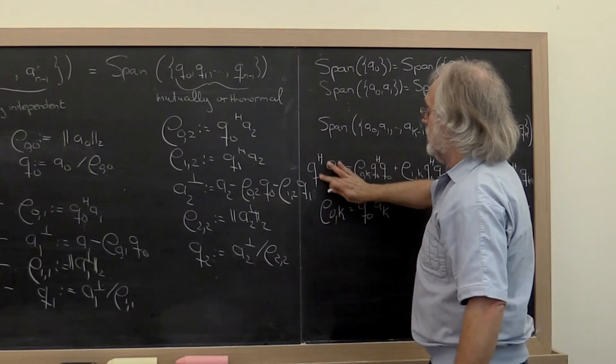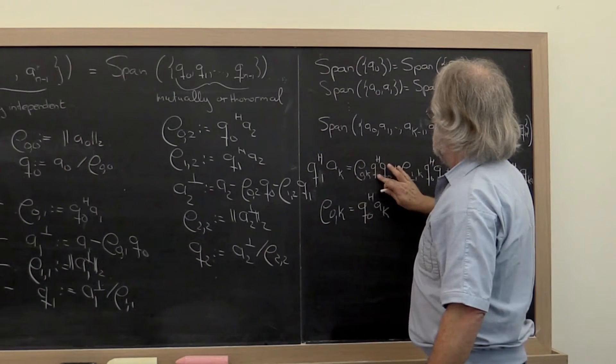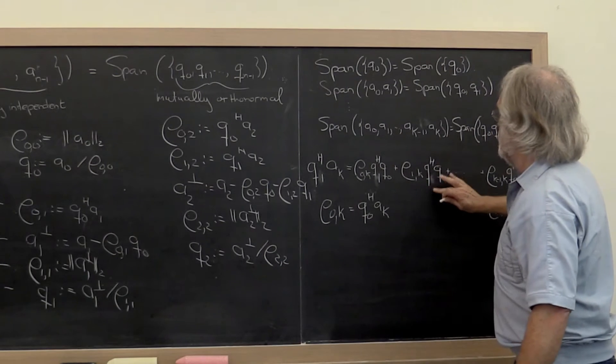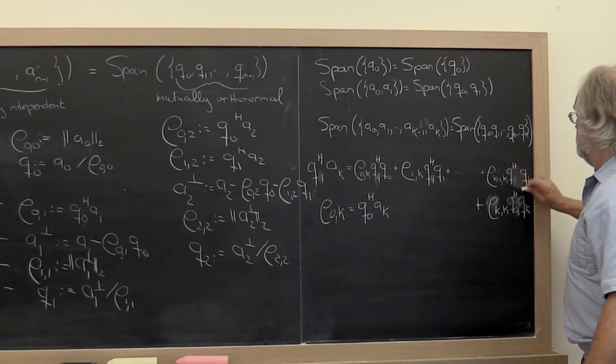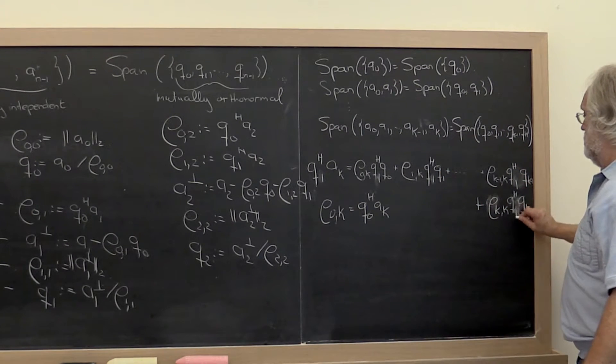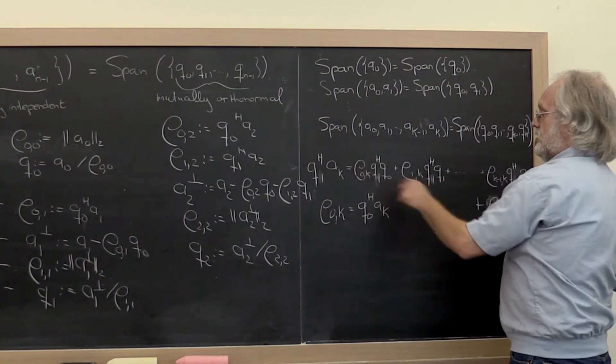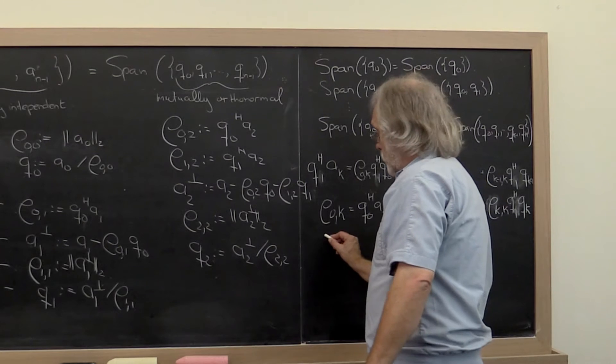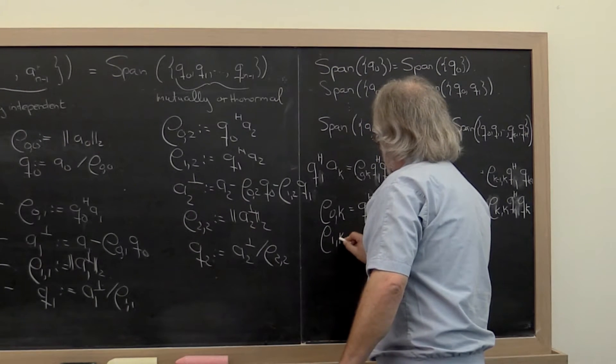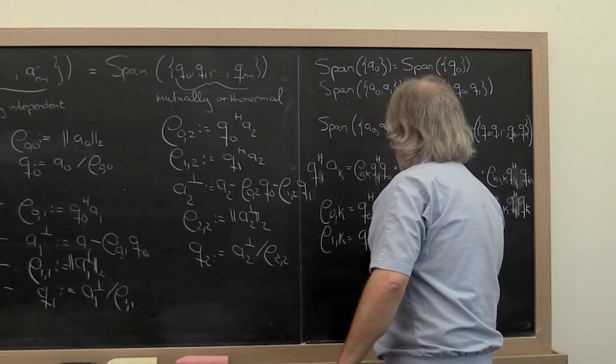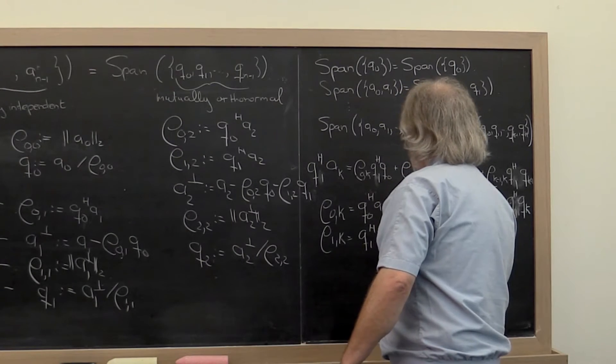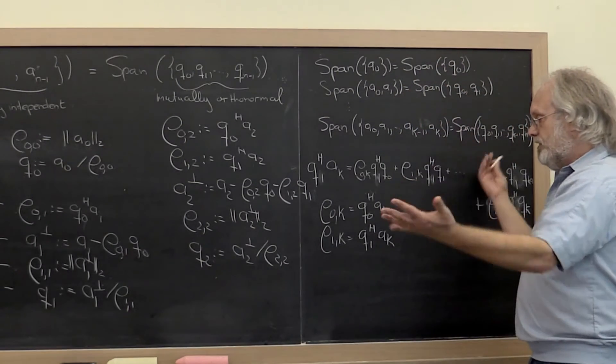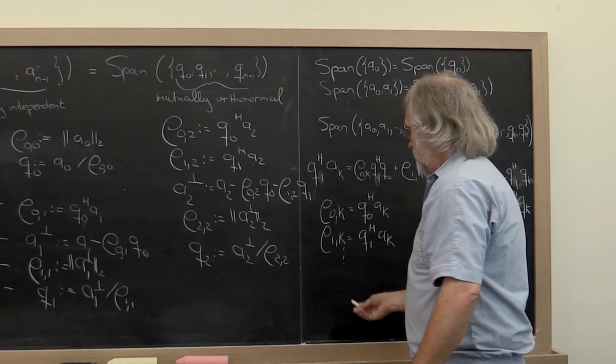Well, then we can go and take the dot product with Q1 and propagate that through. All of the terms except for the one that involves Q1 disappear. And we conclude that rho 1k is equal to Q1 dot product with Ak. And obviously this is true in general.